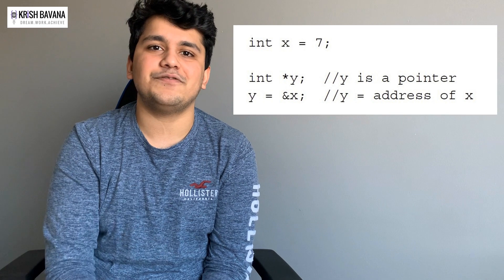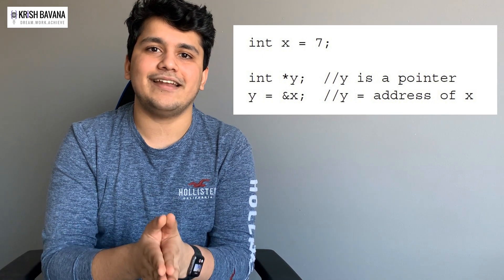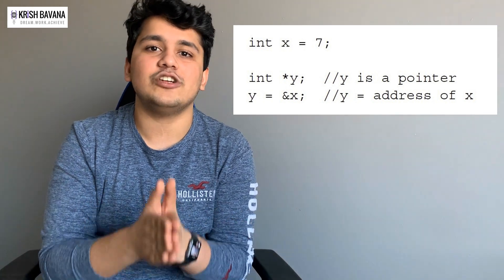Then create a pointer — int pointer y — and assign it to the address of x. So instead of assigning a certain value, you're telling it to look at the address of x every single time rather than updating the value every single time. That's a good practice in C or C++. There are no pointers in Java or Python, but pointers play a very big role in C and C++.